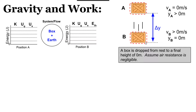At position A, we define the system as both the box and the earth. Does the box or the earth store any energy? The box is above a vertical position of zero, so there must be some energy stored as gravitational potential energy. There's no spring involved, so no spring potential energy. And at position A, the box isn't moving, so there can't be any kinetic energy.